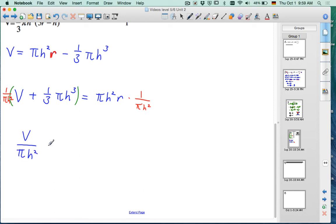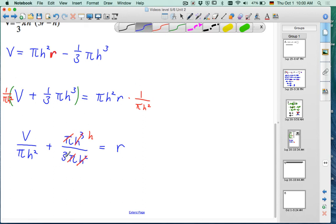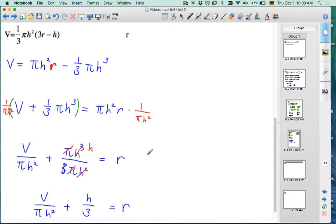We end up with V over π h². And here, on the numerator, you have a π. On the denominator, you have a π. Those will cancel. Then, on the numerator, you have h³, and the denominator, h². So, one of those h's will exist on the numerator and not the denominator. And the 3 from the 1/3 stays in the denominator. And we get V over π h² plus h over 3 equals r.